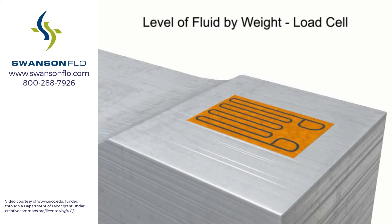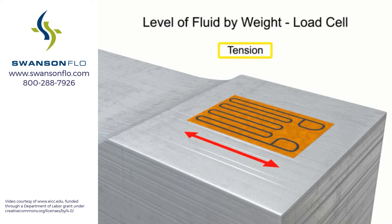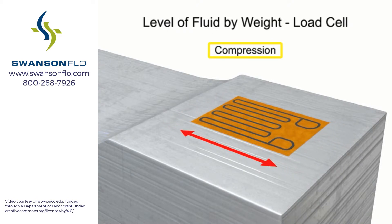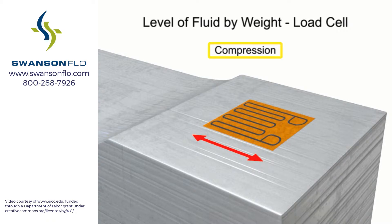As force or weight is applied to the load cell, the strain gauge deforms and causes the electrical resistance to change. In tension, the area narrows and the resistance increases, and conversely, in compression, the area thickens and resistance decreases.